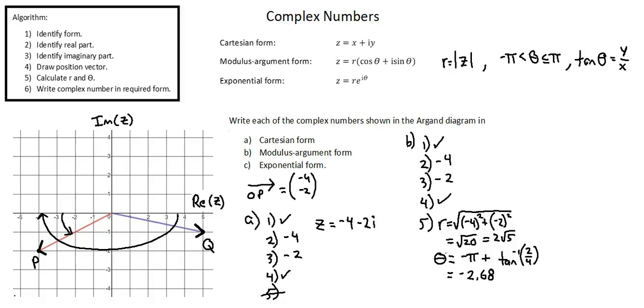Okay, welcome back. As I mentioned, we needed an adjustment to our algorithm, and now we have step six: write complex number in required form.